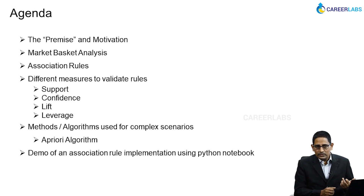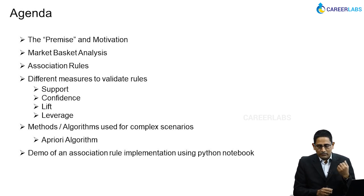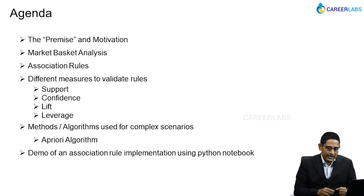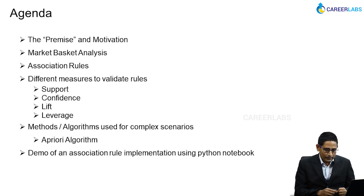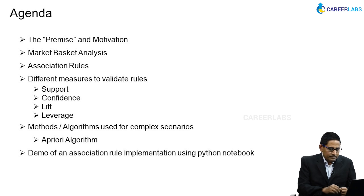Then we move on to association rules. Then we talk about different measures needed for validating the rules, such as support, confidence, lift, and leverage. And then we'll also touch upon some of the methods and algorithms used for complex scenarios, such as the Apriori algorithm.